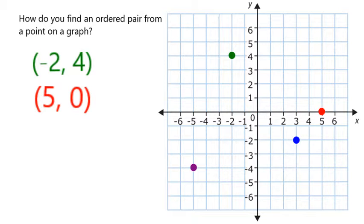Now the blue one is 3 in the horizontal direction and 2 down. And so it can be represented with the ordered pair 3, negative 2.